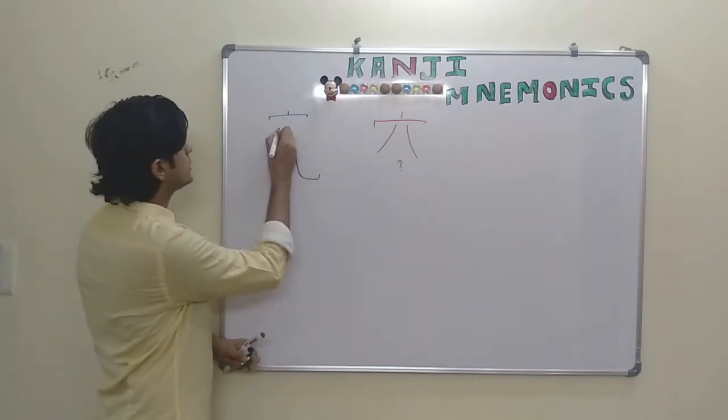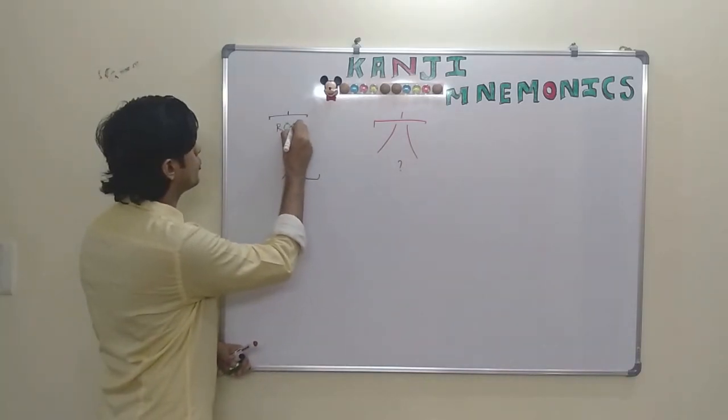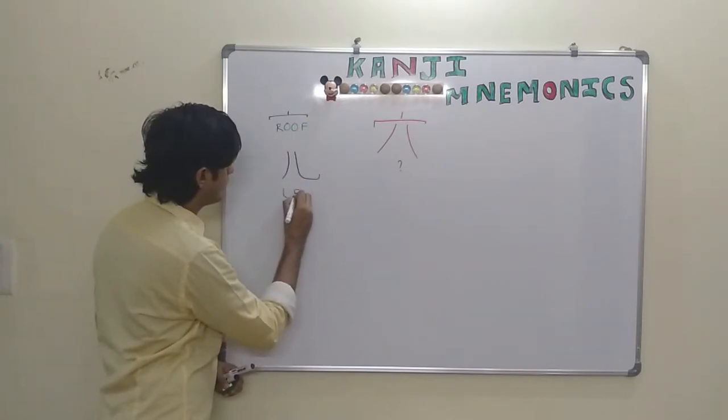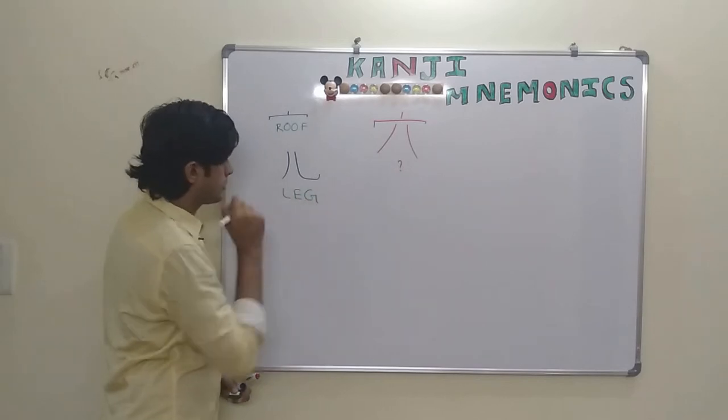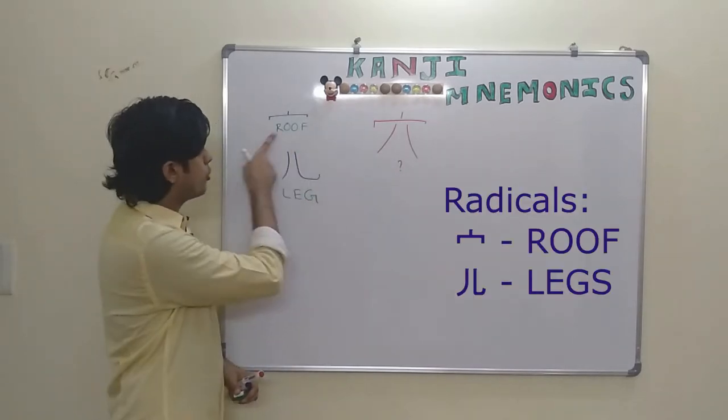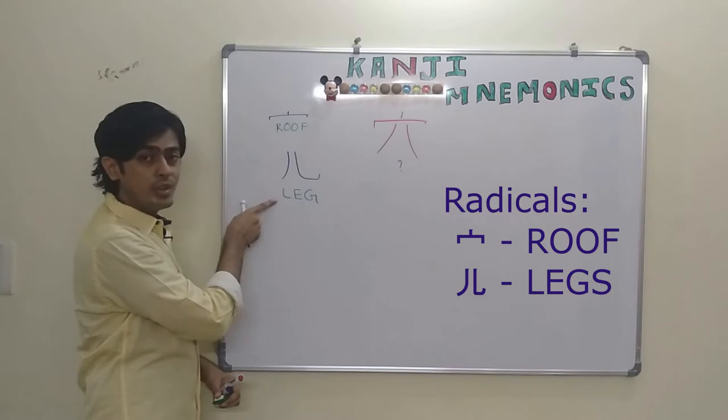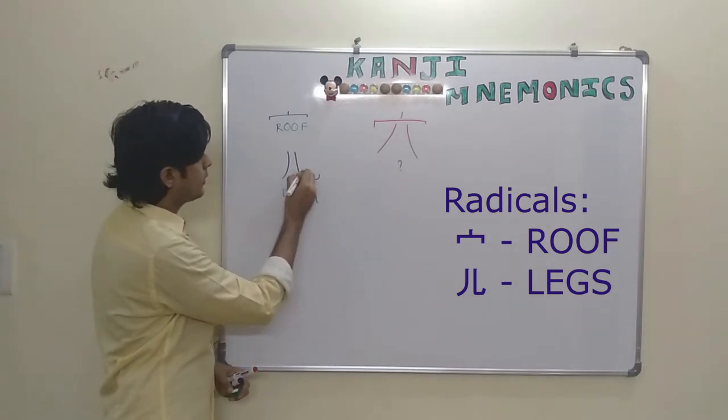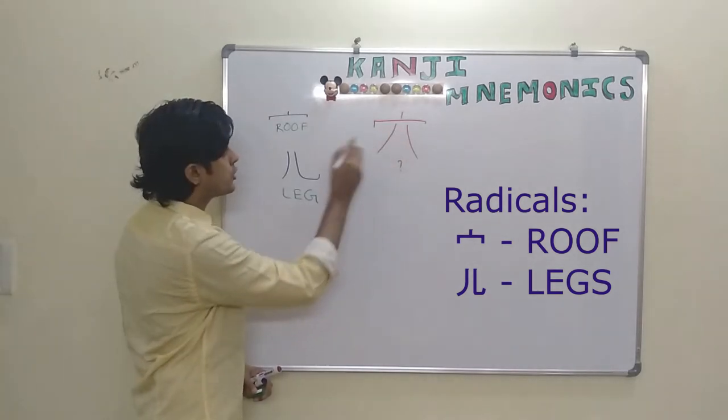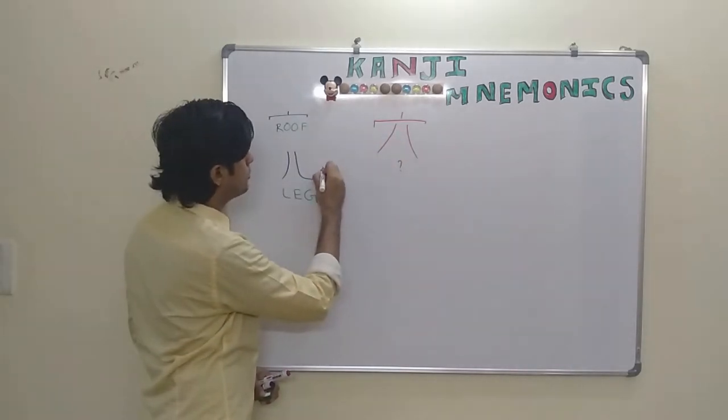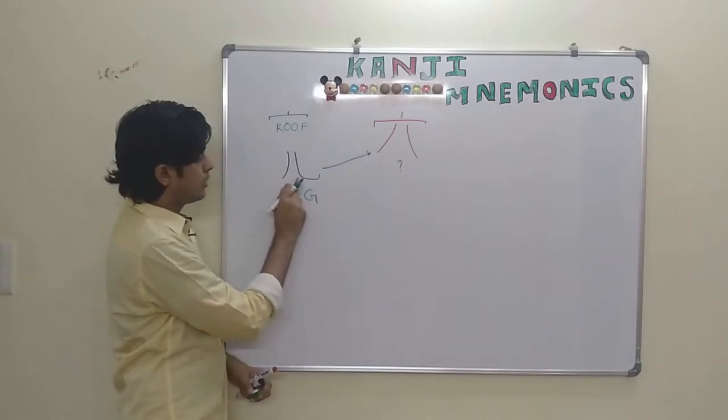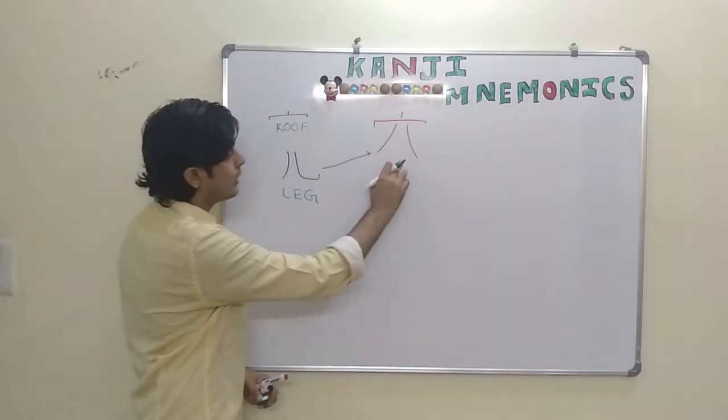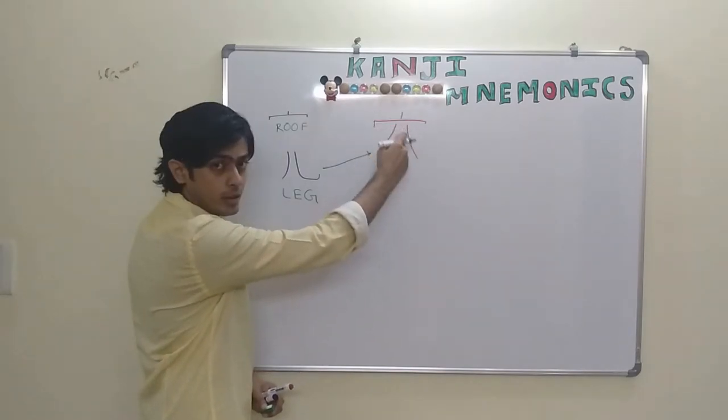Now this is referred to as the roof radical and this is referred to as the leg. Once you keep in mind the meaning of these two radicals you can notice that when this radical is used in conjugation with the roof radical the symbol changes.